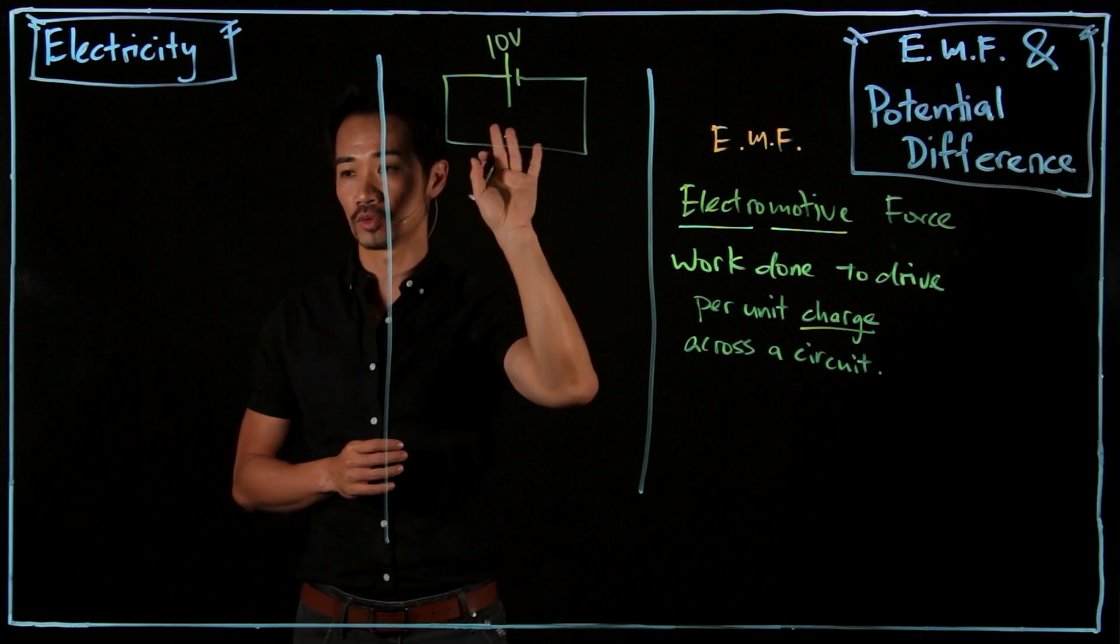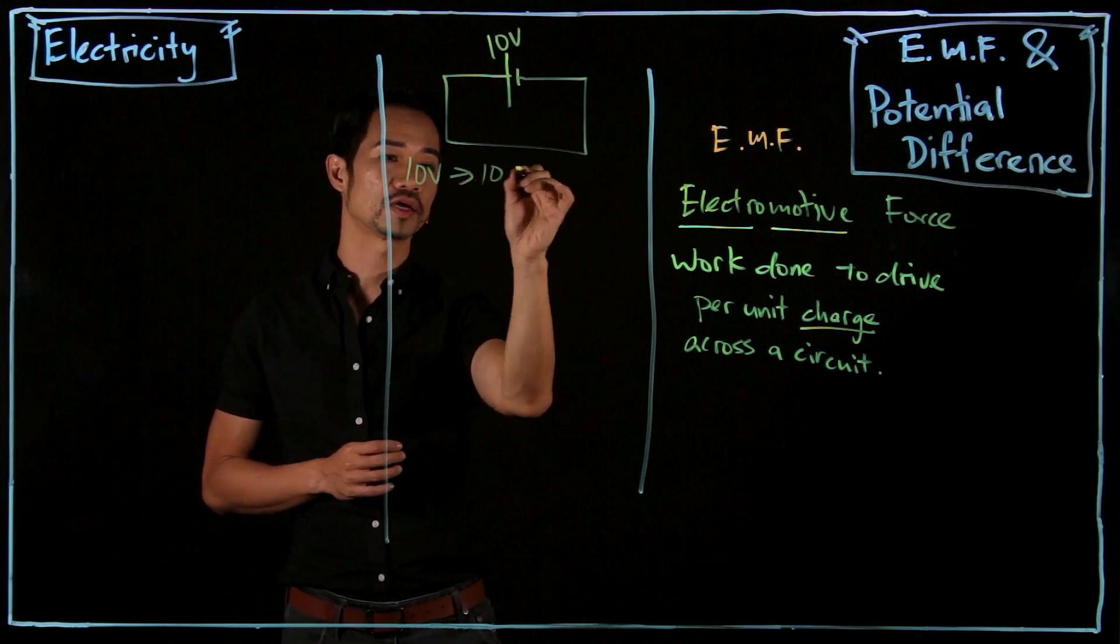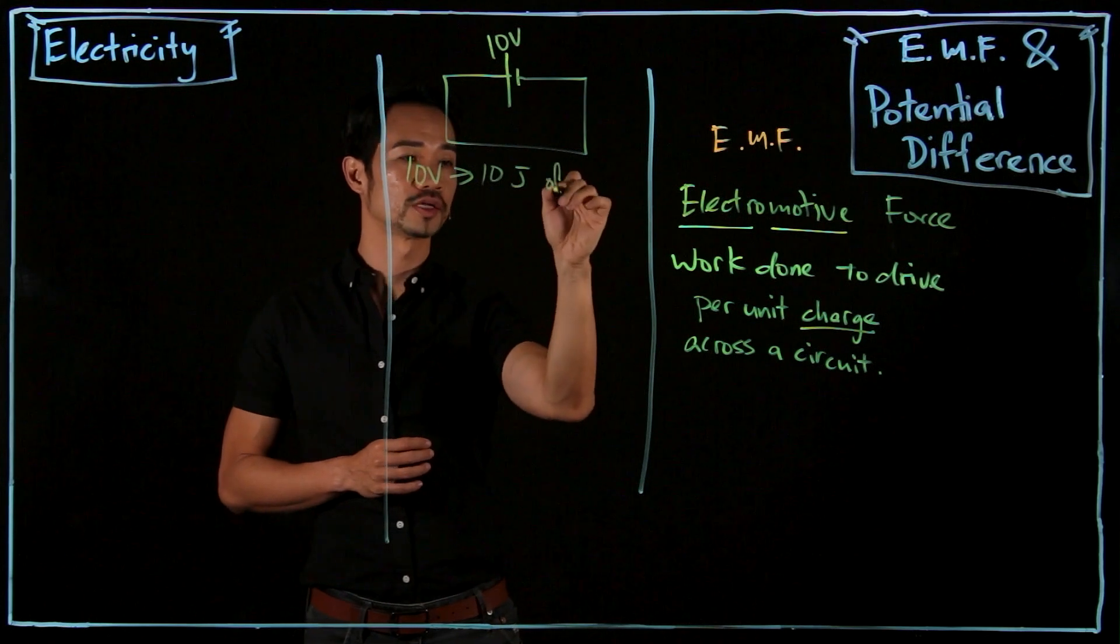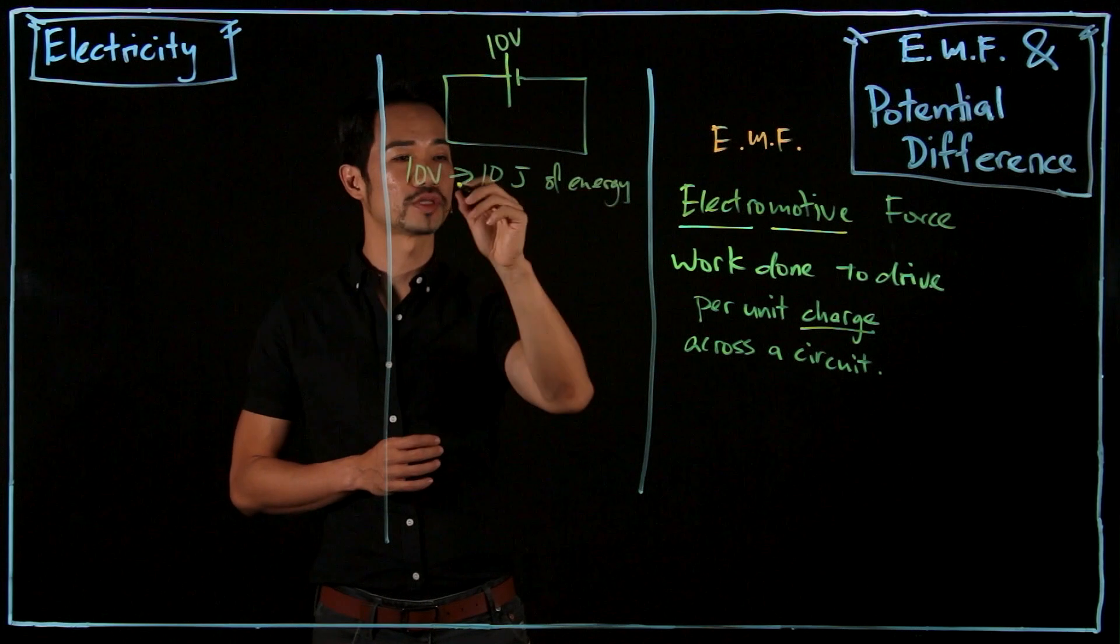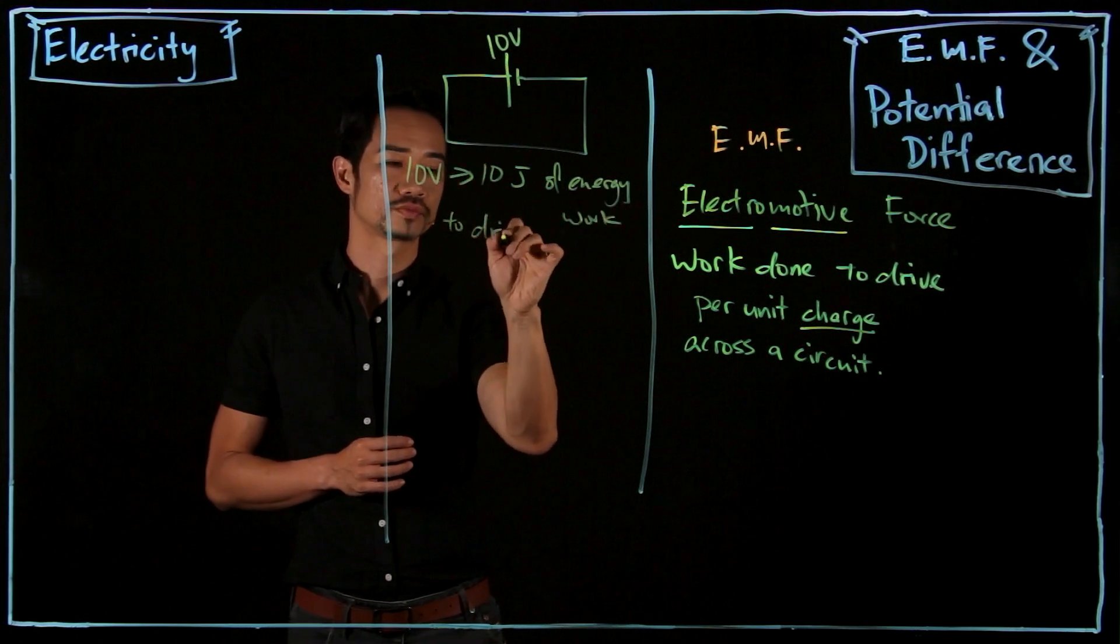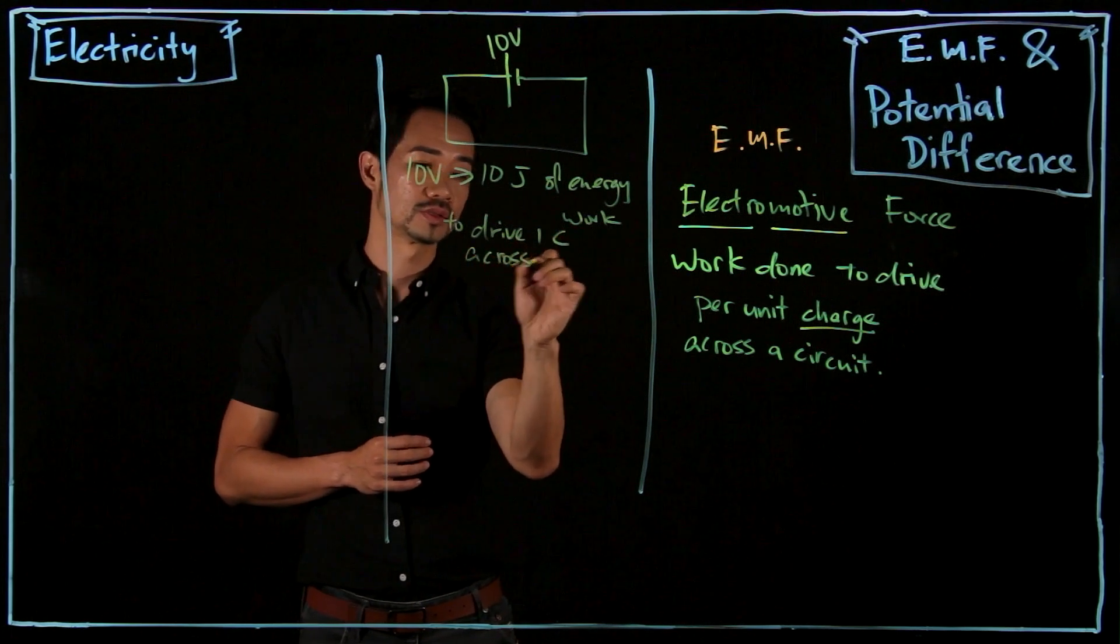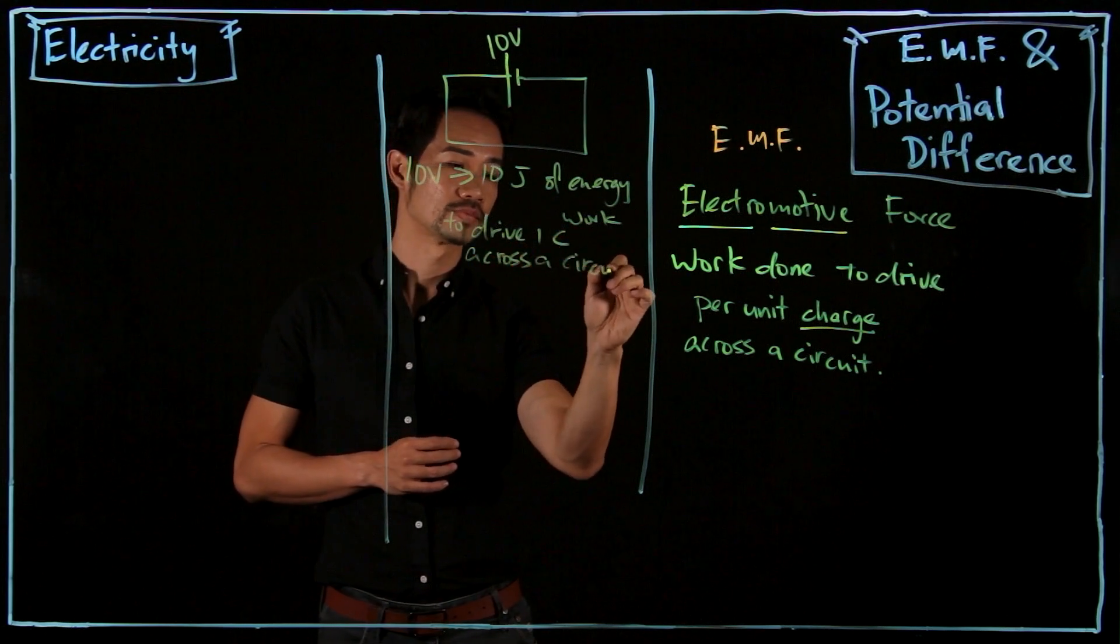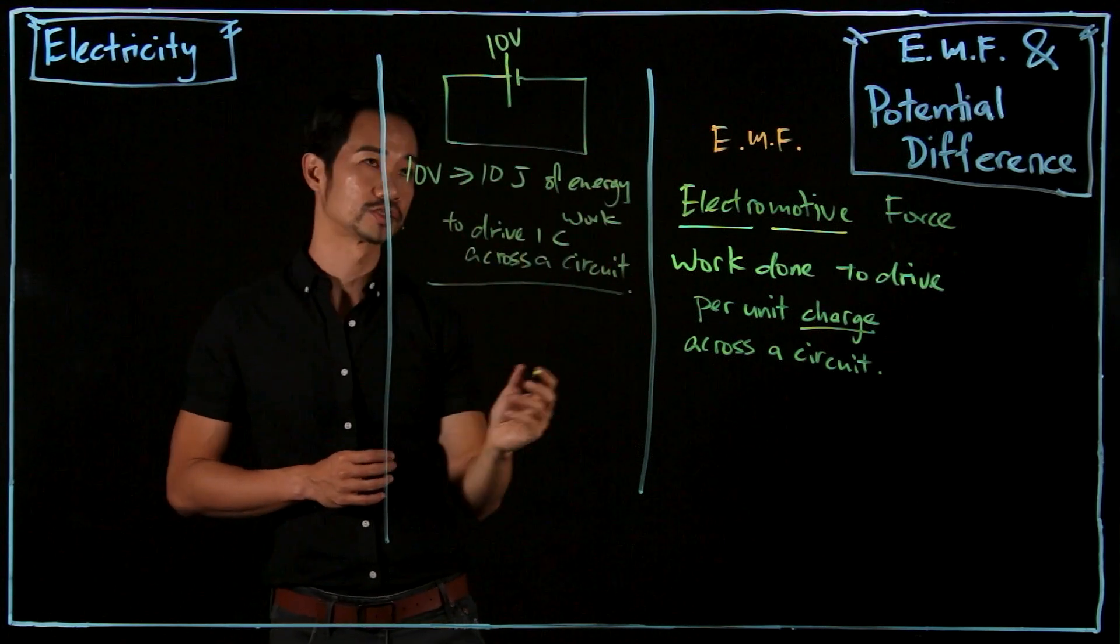So the dry cell will produce an EMF that is pushing the electrons around the circuit. So if I say that this is 10 volts, what this means is 10 volts provides 10 joules of electric energy, or will do 10 joules of work to drive 1 coulomb across a circuit.